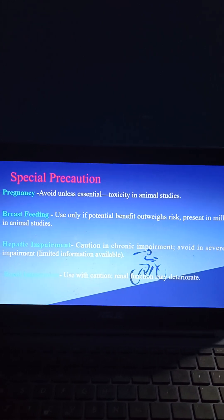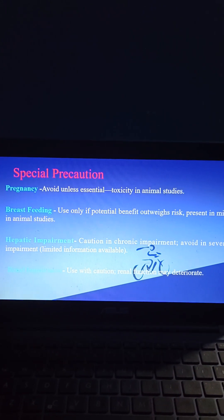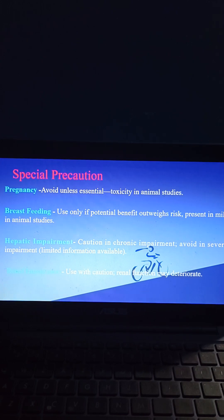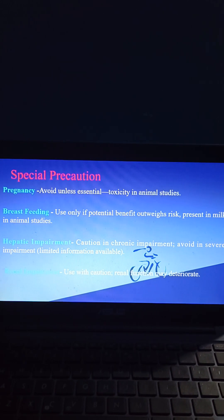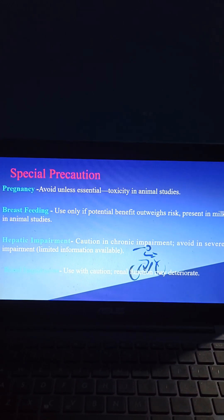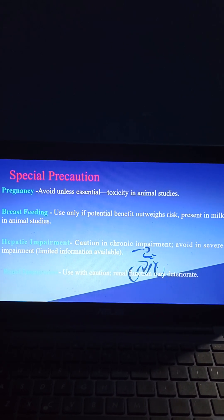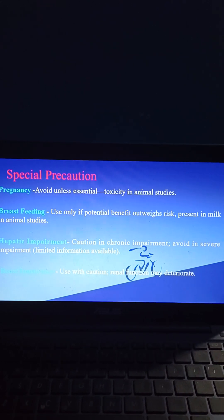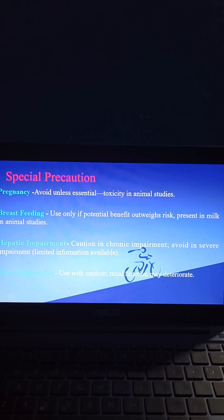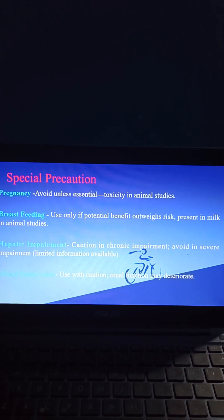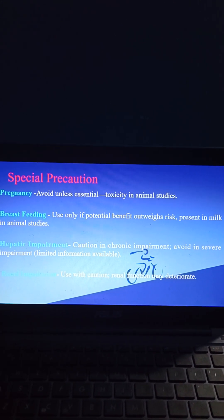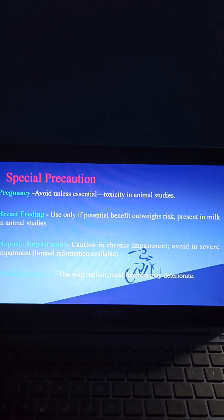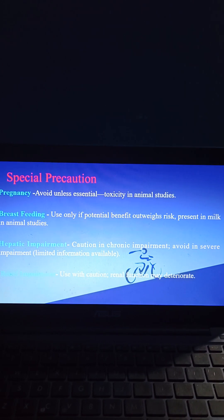Coming to special precautions: in pregnancy, avoid unless essential due to toxicity observed in animal studies. For breastfeeding, use only if potential benefit outweighs risk, as it is present in milk in animal studies. For hepatic impairment, use with caution in chronic impairment and avoid in severe impairment as limited information is available. In renal impairment, use with caution as renal function may deteriorate.